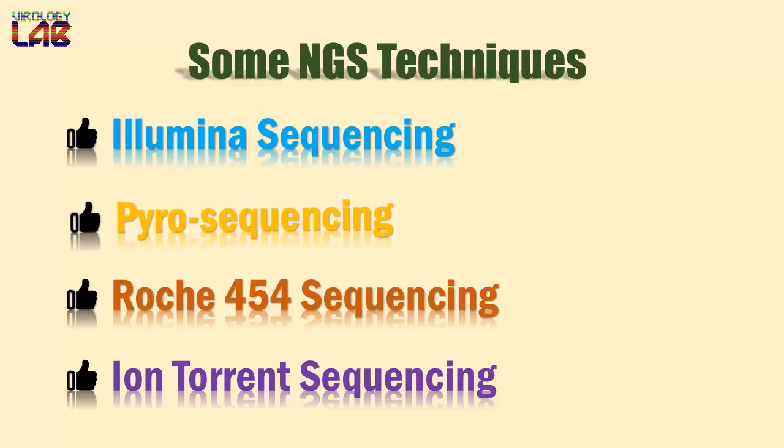Pyrosequencing is based on the generation of a light signal through release of pyrophosphate (PPi) on nucleotide addition. Pyrosequencing is also a high throughput method of DNA sequencing and is considered an example of next generation sequencing.